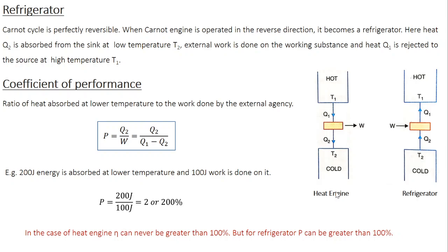Now if you operate it in the reverse direction, the working substance absorbs heat Q2 from the sink at lower temperature T2, and rejects heat Q1 to the source at higher temperature T1. According to the second law of thermodynamics, heat cannot flow from a cold object to a hot object on its own, so we need to do some external work W on the system. This setup — a heat engine working in reverse — is known as a refrigerator.